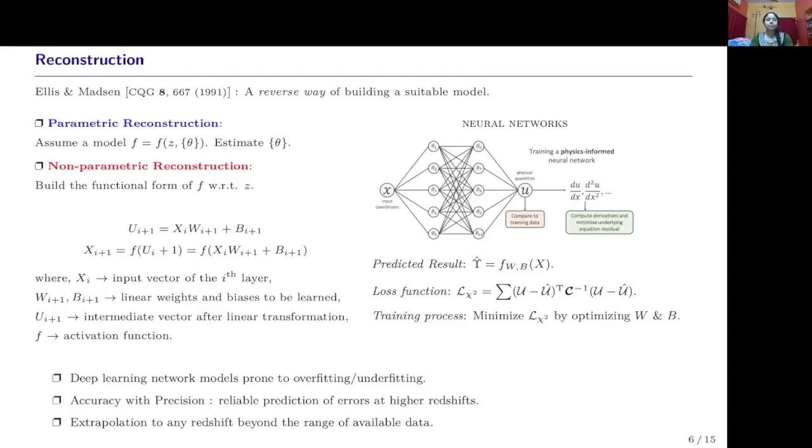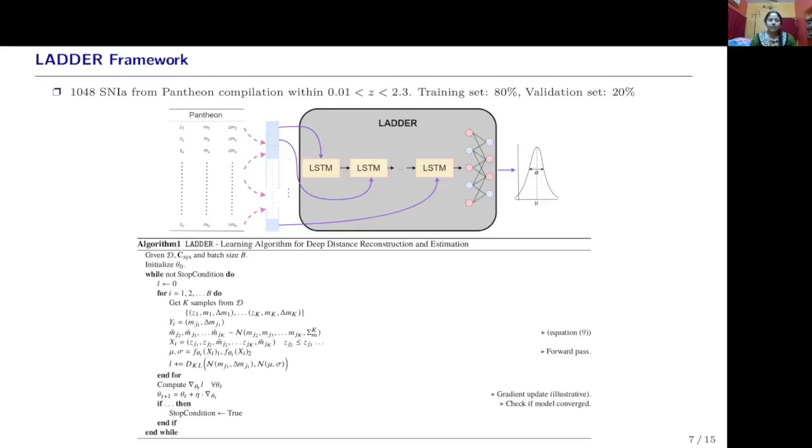In view of all these issues, it is important to reconstruct or revisit the distance ladder in an entirely non-parametric way. To do this, we will use neural networks. Given our datasets, our aim is to find out the underlying function describing this data without assuming any cosmological model. A wide variety of deep learning models already exists in literature, and we are aware that deep learning models are often prone to overfitting or underfitting issues. Because our aim is to do precision cosmology, we want to have reliable predictions of errors or uncertainties at both lower and higher redshifts, which can be extrapolated to redshifts beyond the available data range in data-sparse regions.